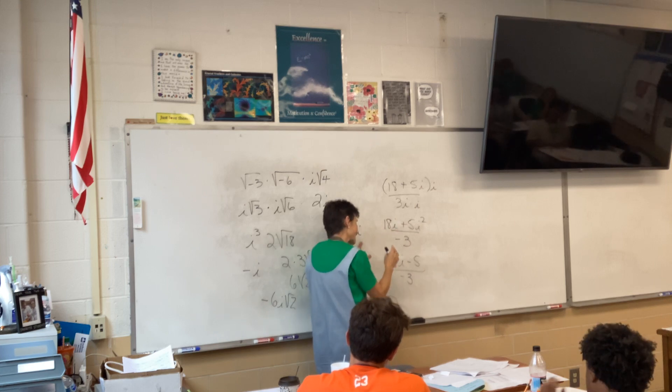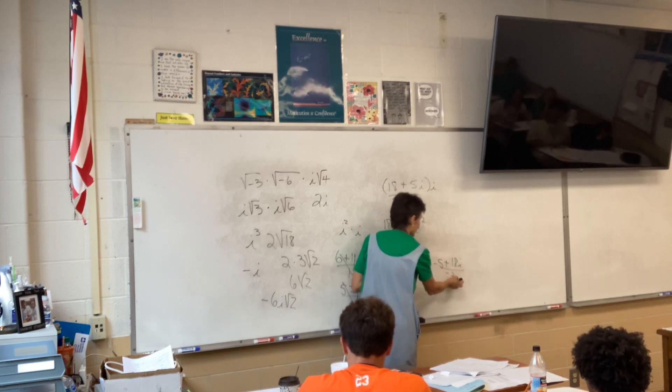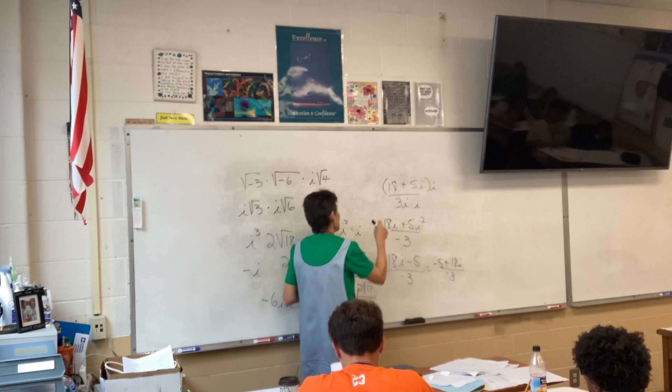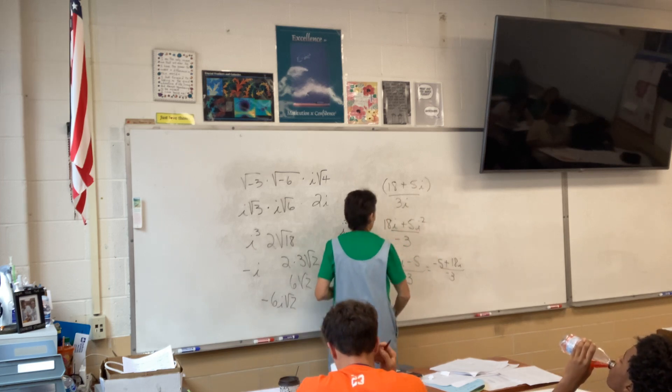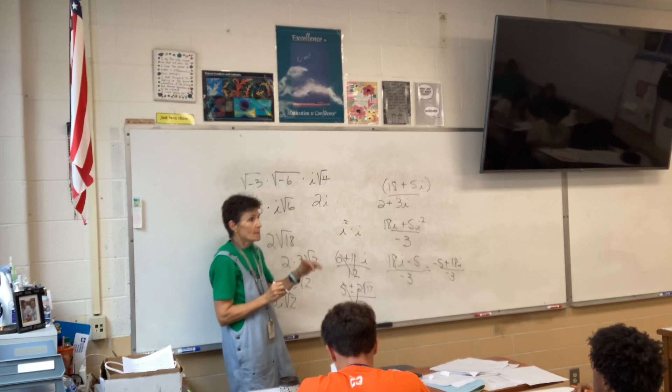That becomes i squared. I get i squared, which is negative 1 and no more i's in the bottom. So that would be negative 3 on the bottom. And then on the top, I'll distribute. But now I have an i squared, so that would be minus 5. Yeah. Now, a couple of things.